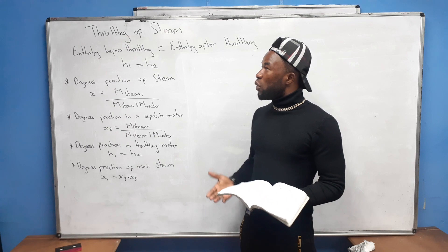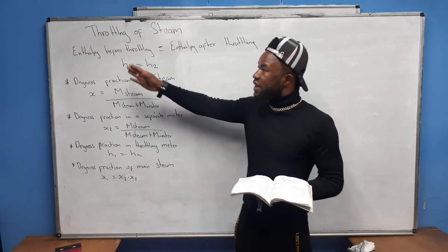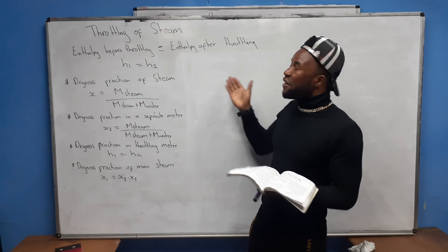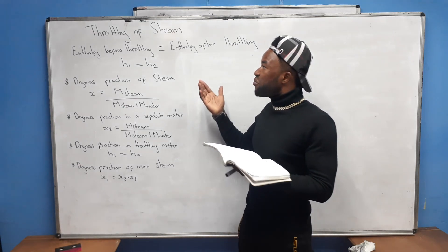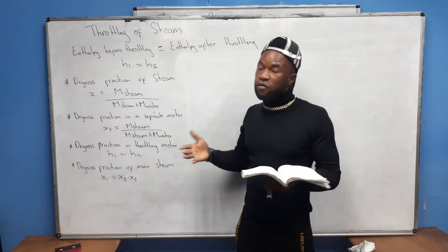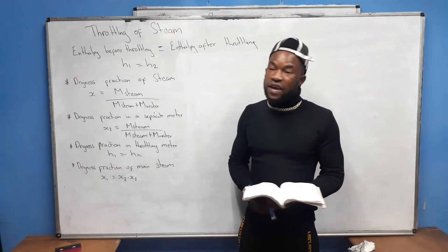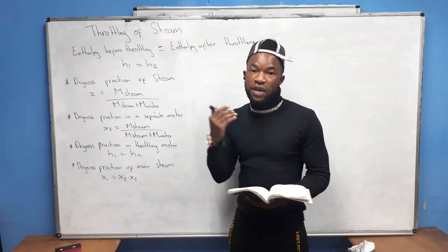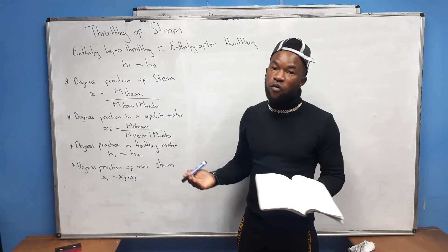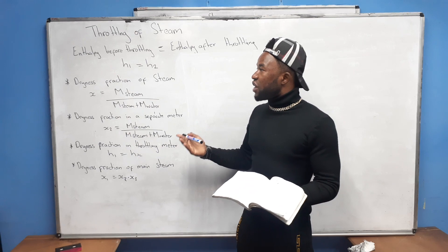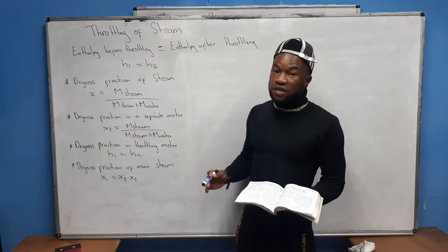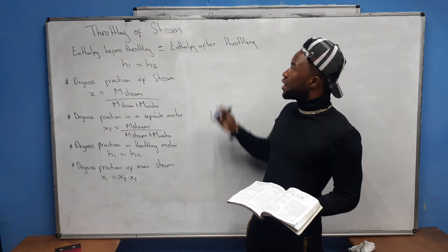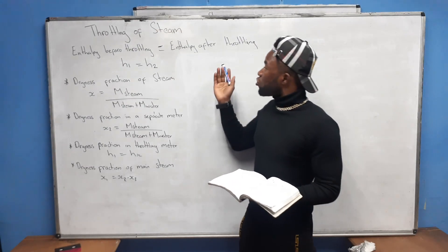The most important thing you must know when talking about throttling of steam is that the enthalpy before throttling is equal to the enthalpy after throttling. In Chapter 6 on steam volumes, we have different types of enthalpy: the enthalpy of superheated, the enthalpy of wet steam, and the enthalpy of dry steam.